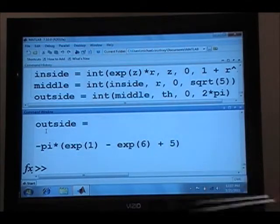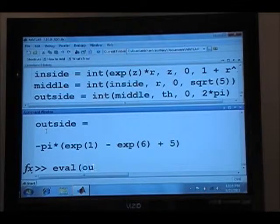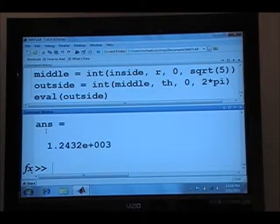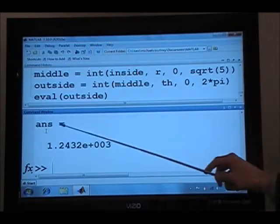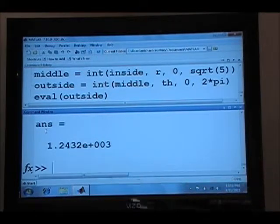And it looks like it's going to be negative, but then we can convert it to a decimal using the eval. So we eval the outside integral, and it tells us that the answer is 1.243 times 10 to the third.